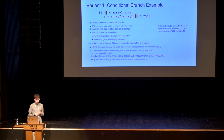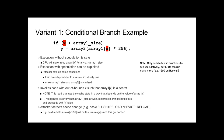For variant one, we have a conditional branch with an attacker-controlled X compared to an array size — only if X is below the array size do we actually do the access. Architecturally it looks fine: if X is too big we just don't execute the second line. But if an attacker first trains the branch predictor to assume X will be smaller than the array size, and then evicts the cache line containing the array size to main memory so the processor must wait for that memory access to resolve the branch, the attacker can cause the second line to execute as transient instructions.